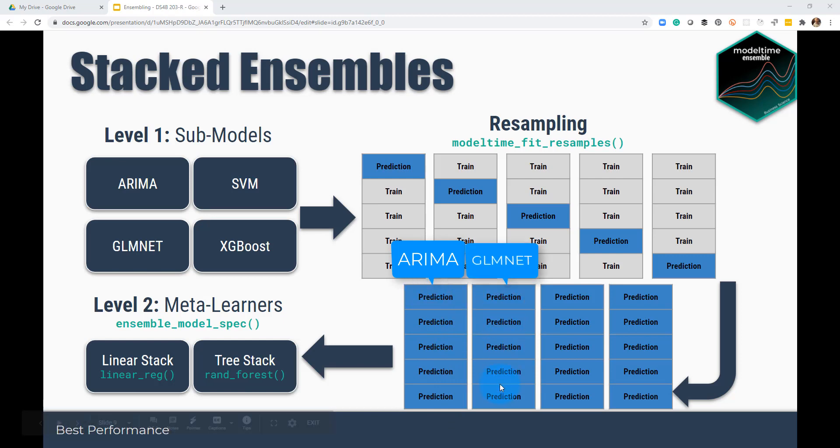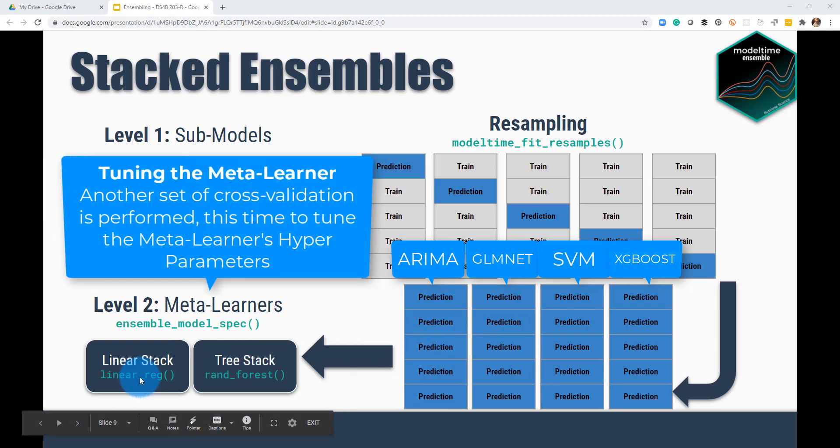So you get for each one of your models, all four of your models, you get predictions for ARIMA, cross validation predictions for GLMnet, cross validation predictions for support vector machine, and cross validation predictions for XGBoost. So this starts to look like a table that you can then run a meta learner on. So you would just take your random forest and you would run it on these. Now, what you typically do is you do a second set of cross validation in order to tune these models if they're tunable.